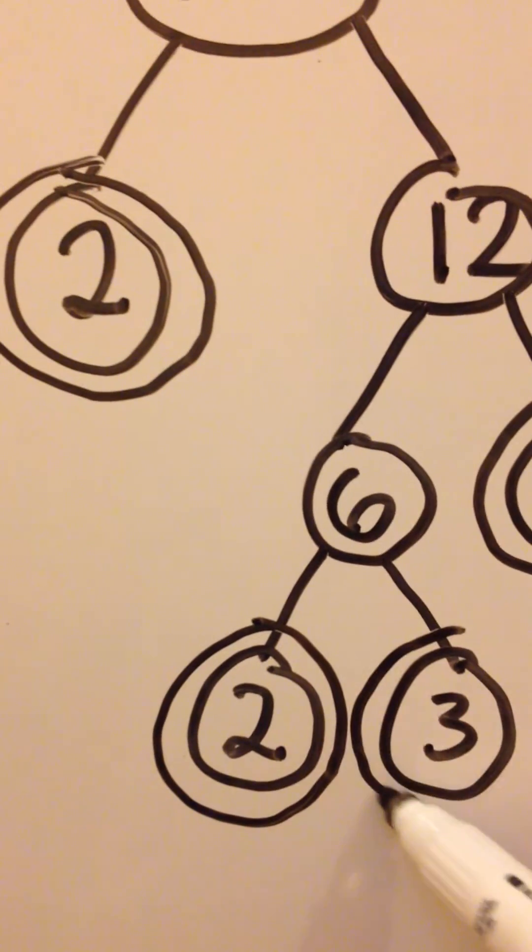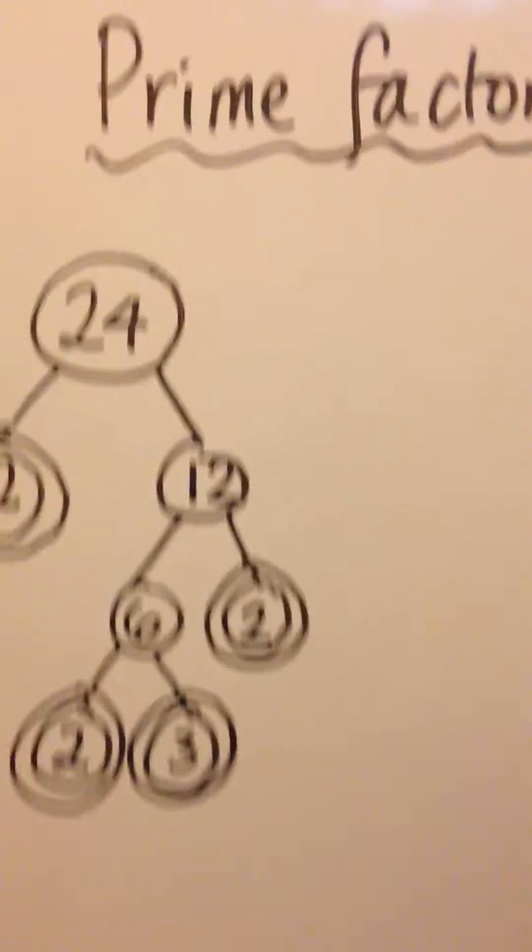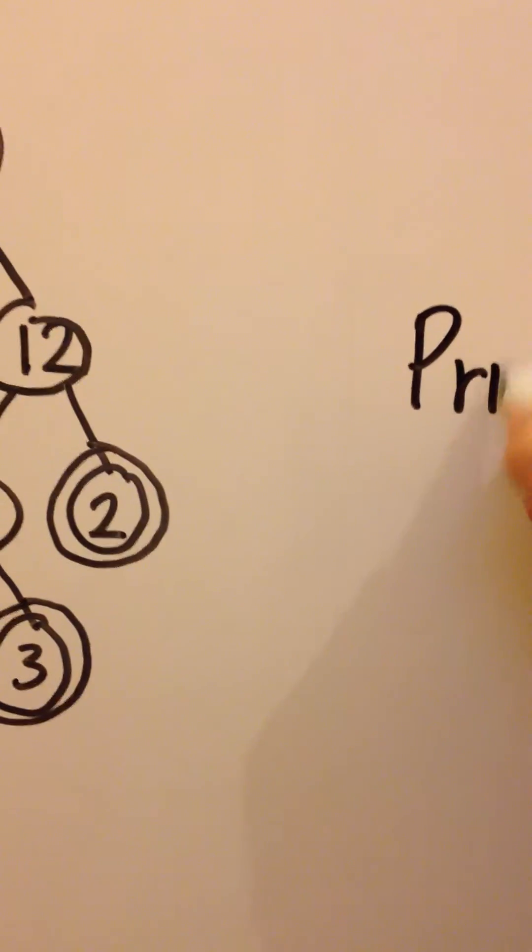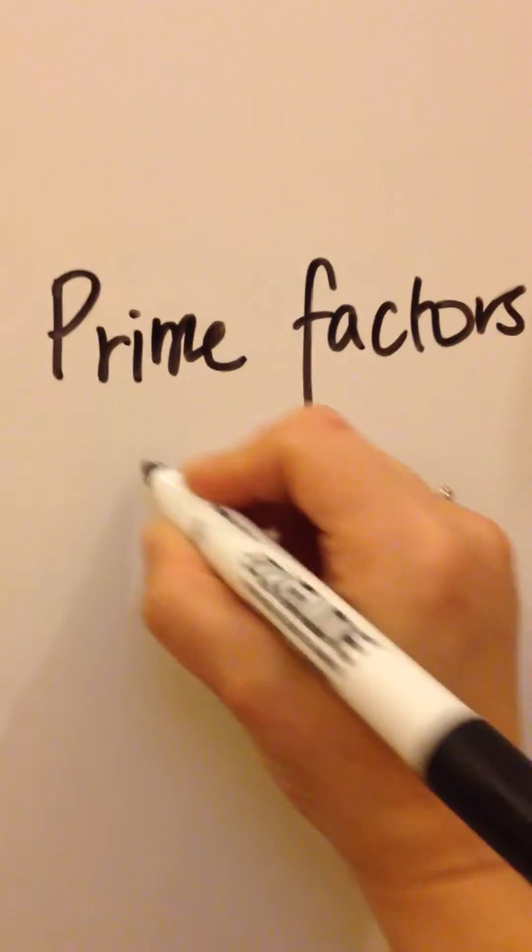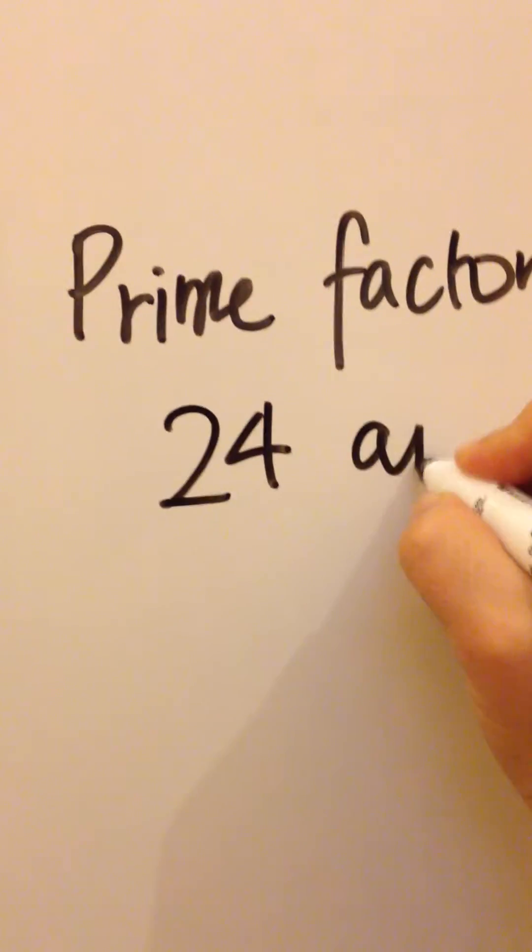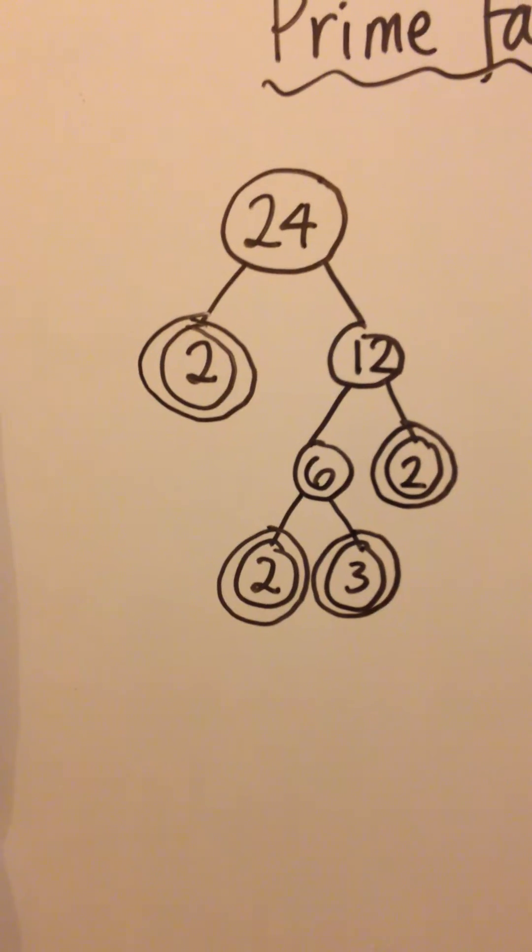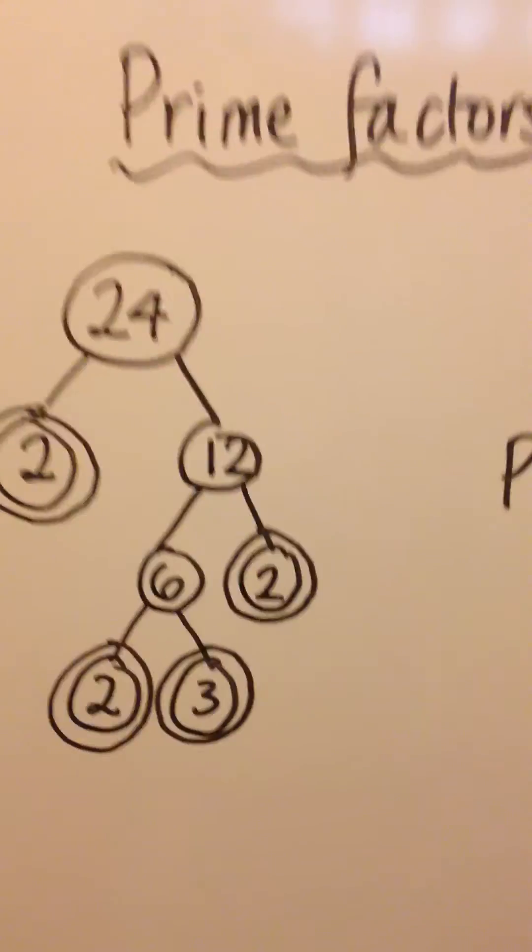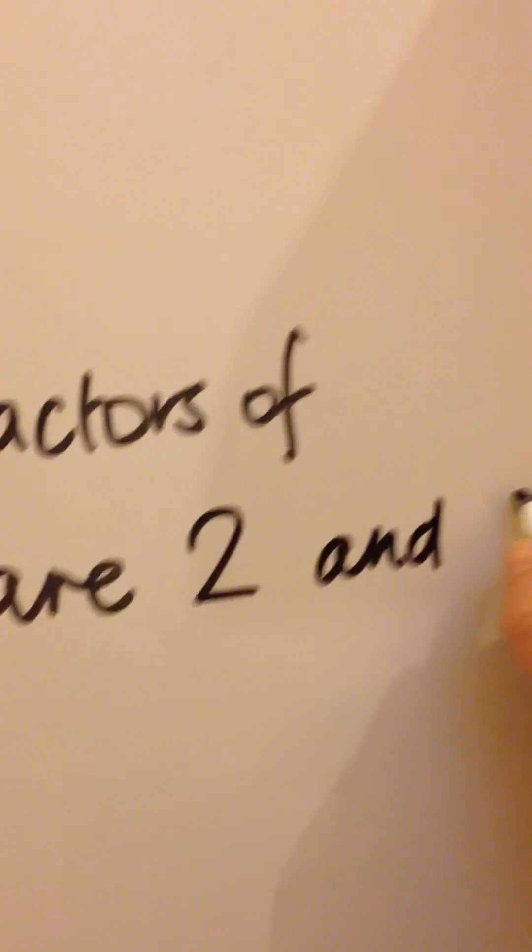Now, every branch has reached a dead end, so we've finished. So, we write down on this side: prime factors of 24 are... Let's see which numbers came up. At the bottom, we've only got a 2 and a 3.